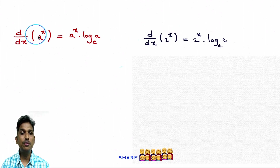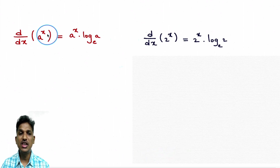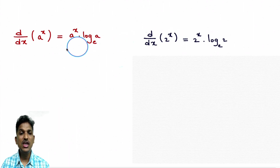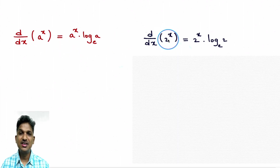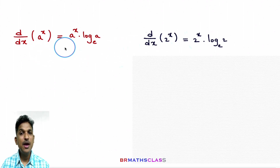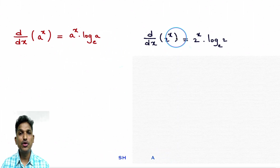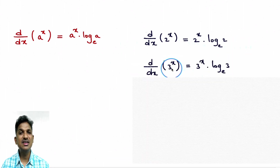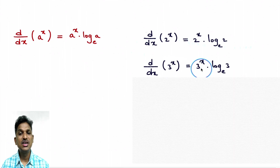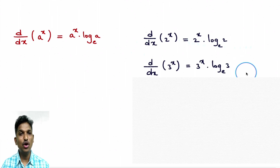d/dx of 2 power x — observe that here a is a positive real number (2) and x is a variable. This formula applies to 2 power x, but not to x square (where x is in the base, not the exponent). So derivative of 2 power x is 2 power x into log 2 base e. Similarly, derivative of 3 power x is 3 power x into log 3 base e.